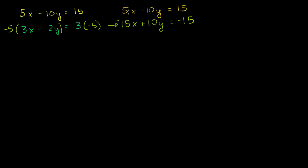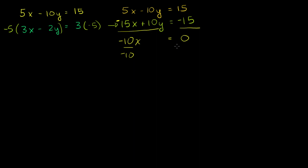If we add the transformed equation to the left-hand side of the top equation, and add negative 15 to its right-hand side, we're adding the same thing to both sides. So: 5x plus negative 15x is negative 10x. The y's cancel out — negative 10y plus 10y is zero. That was the whole point of multiplying by negative 5. It's equal to 15 minus 15, which is 0. So negative 10x equals 0. Divide both sides by negative 10, and x is equal to 0.